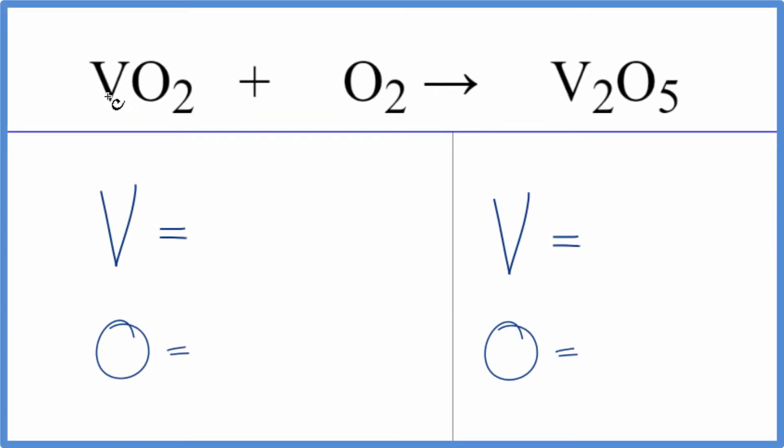In this video we'll balance the equation for VO₂ plus O₂ yields V₂O₅. Let's count the atoms up and balance the equation. We have one vanadium atom, we have two oxygens here plus we have these two here, don't forget those, total of four. Two here and five oxygen atoms.